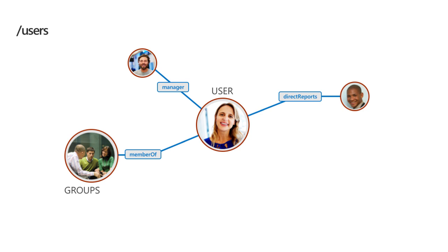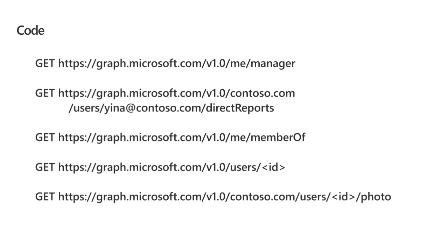The users endpoint also lets you see relationships between different people. When you go to a user you can see who their manager is, who their direct reports are, and what groups they're a member of. For example, going to the /me/manager endpoint shows your manager, or you can go to a user like Yena at Contoso to find all of Yena's direct reports. You can also find what groups you're a member of via /me/memberOf, or see a colleague's photo in the contoso.com organization.